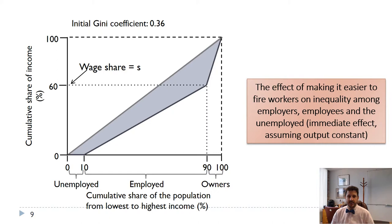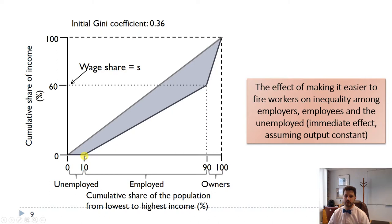Here we look at the effect of making it easier to fire workers. These are illustrative examples, not based on real data, but grounded in the idea that if people can be fired more easily, they have fewer rights and may face higher unemployment. The initial Gini coefficient is 0.36. 10% of people are unemployed with no income in this model. Workers — the next 80% — all earn the same, and 10% are owners with a much steeper income. The initial Gini of 0.36 is the shaded area divided by the triangle under the 45-degree line.